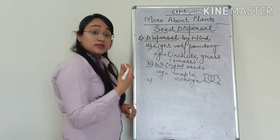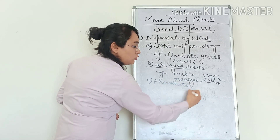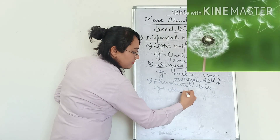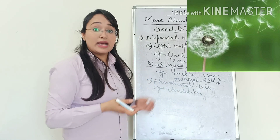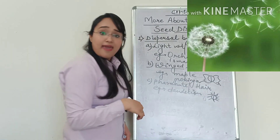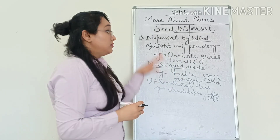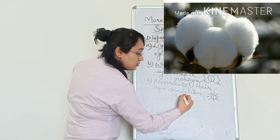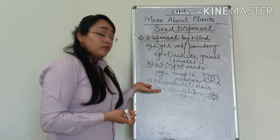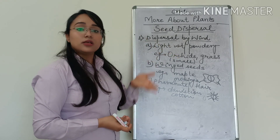Next, there are some seeds which are in the shape of a parachute or have a hair-like structure. For example, dandelion. If you have ever seen dandelion, it has very lightweight hair around the seed. When the wind blows, the seed can be easily carried away and dispersal happens. The same is the case with cotton. So the seed should be very light in weight, it should have a winged form or hair-like structure. These are the adaptations by which dispersal by wind is possible.